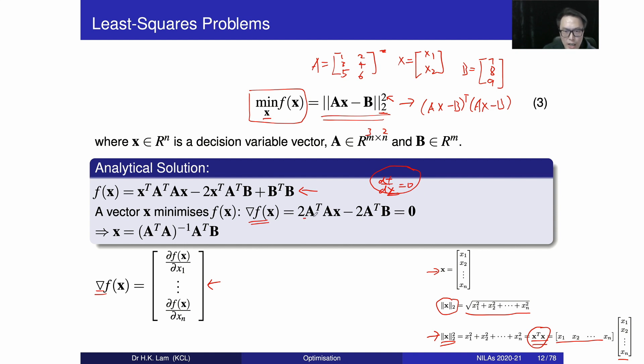Now A and B, they are constant matrices or vectors according to the application. The only unknown is x. So if we are going to arrange the term, put everything on the right hand side, we come up with this x. So when you know the value of A and B, and then if this inverse exists, then we can find out the solution of x immediately. So this is the solution to this minimization problem.